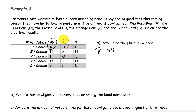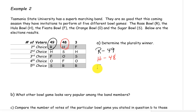The Hula Bowl H has 48 first place votes, and the Fiesta Bowl F has three first place votes. So the Rose Bowl wins.